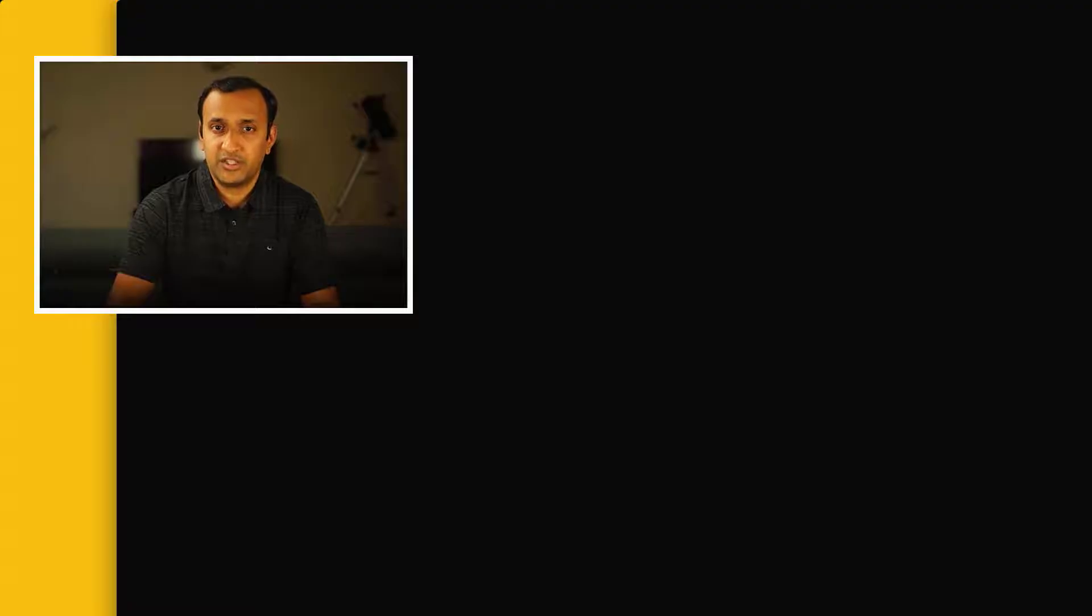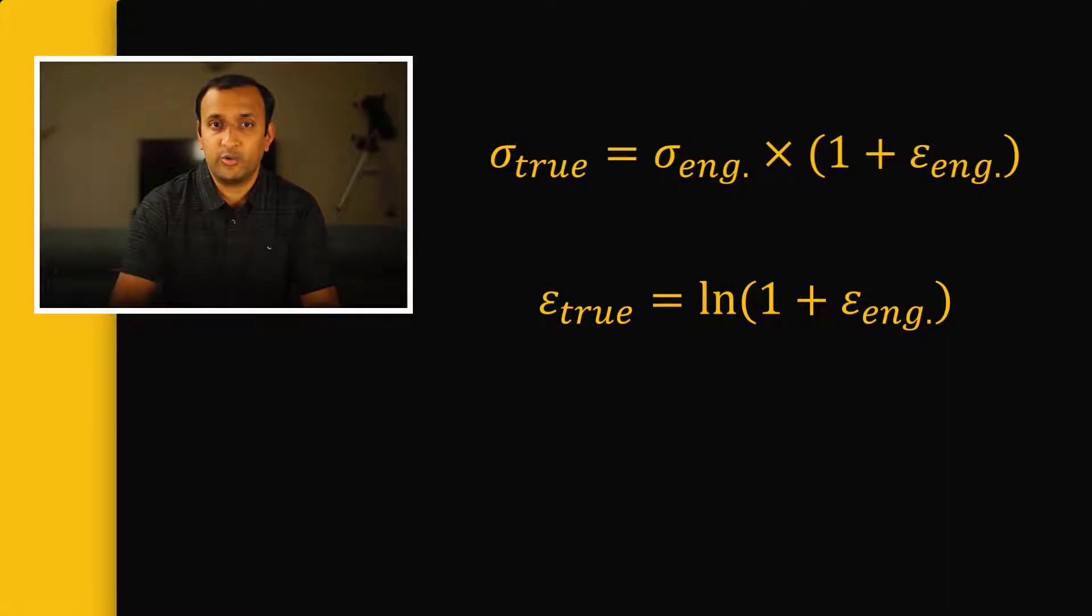The conversion from engineering stress and strain can be done using this set of equations, where sigma_true and sigma_engineering are true and engineering stresses, and epsilon_true and epsilon_engineering are true and engineering strains. Note that these equations are derived assuming incompressible behavior. For most practical cases, this assumption is not problematic, but it's worth keeping it in mind.